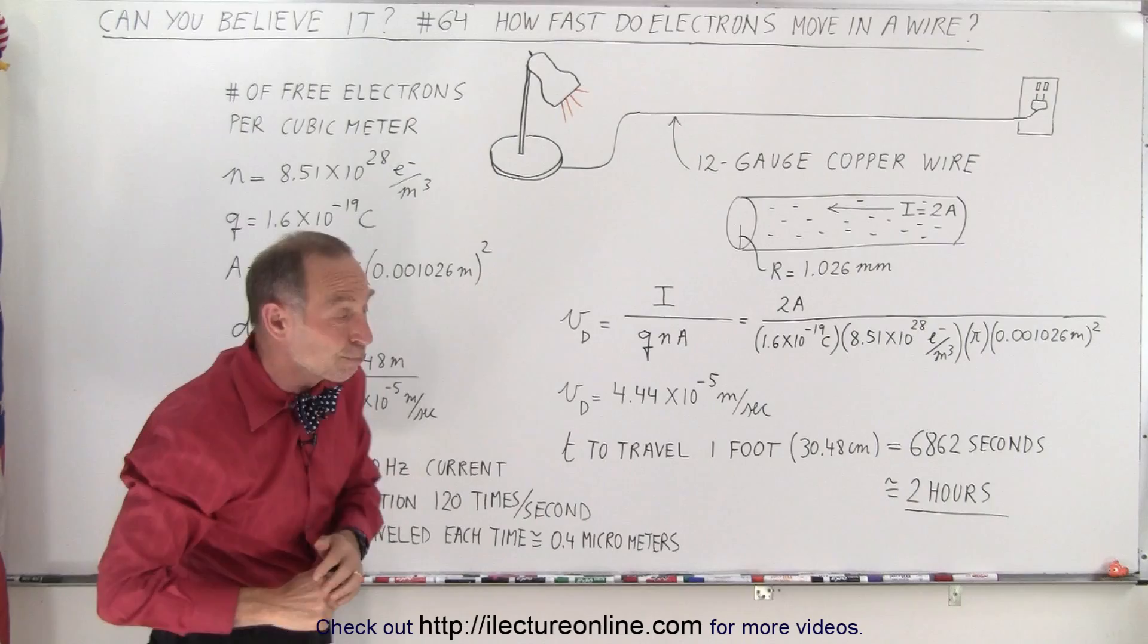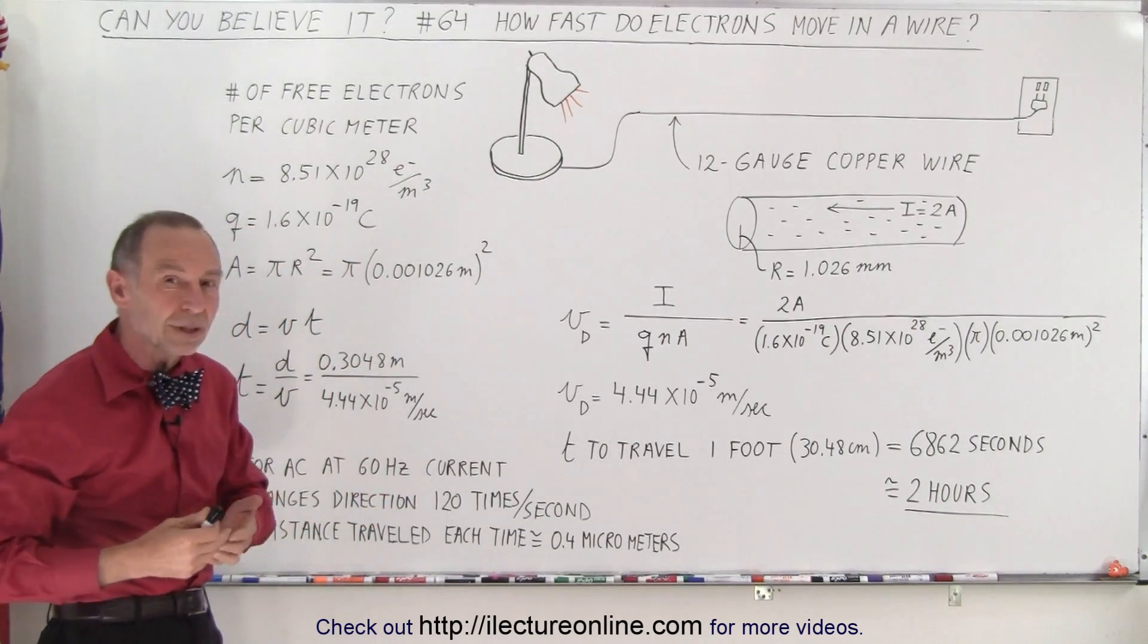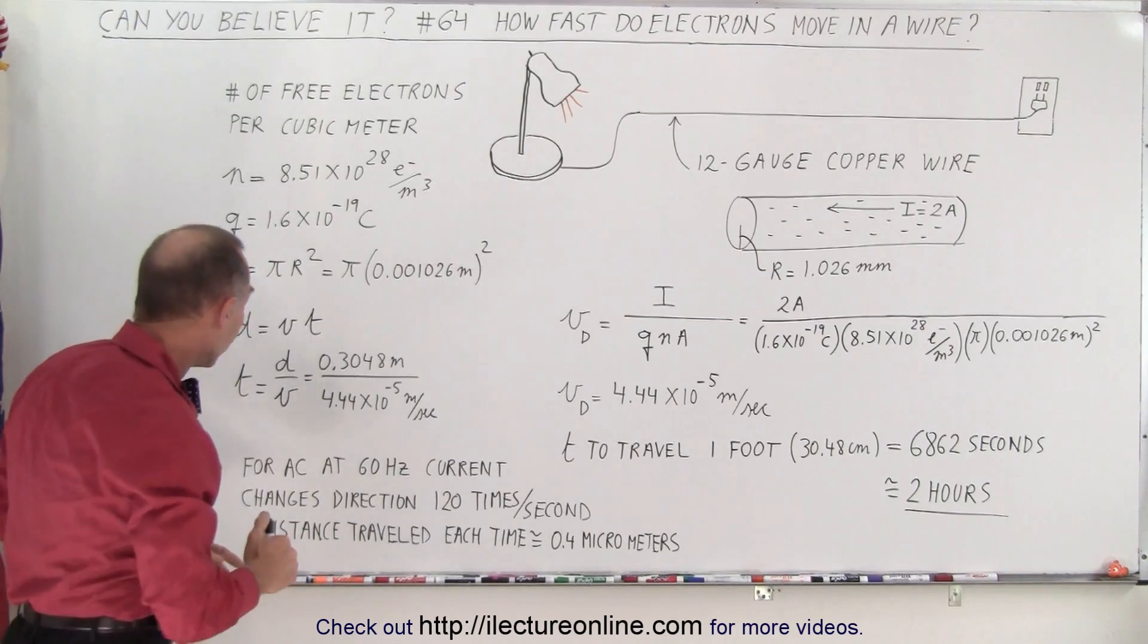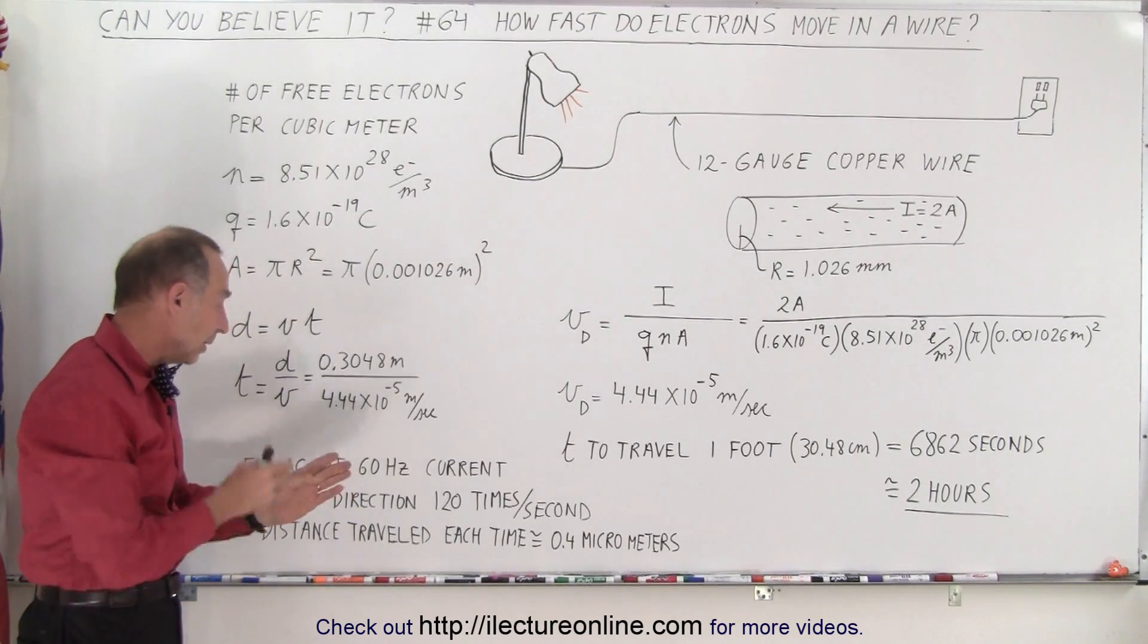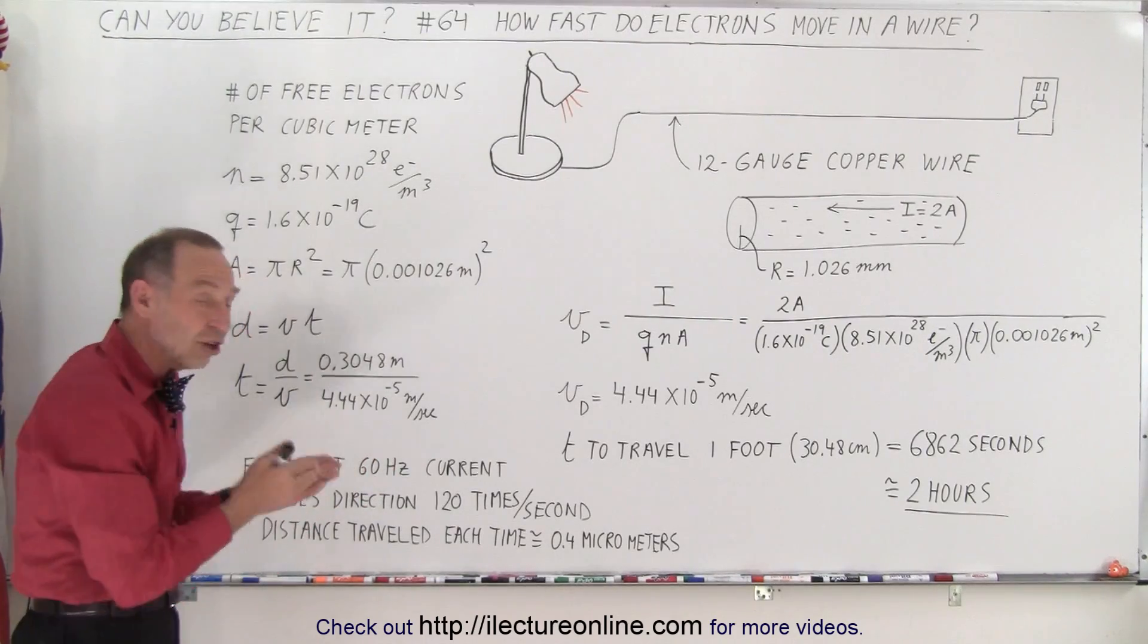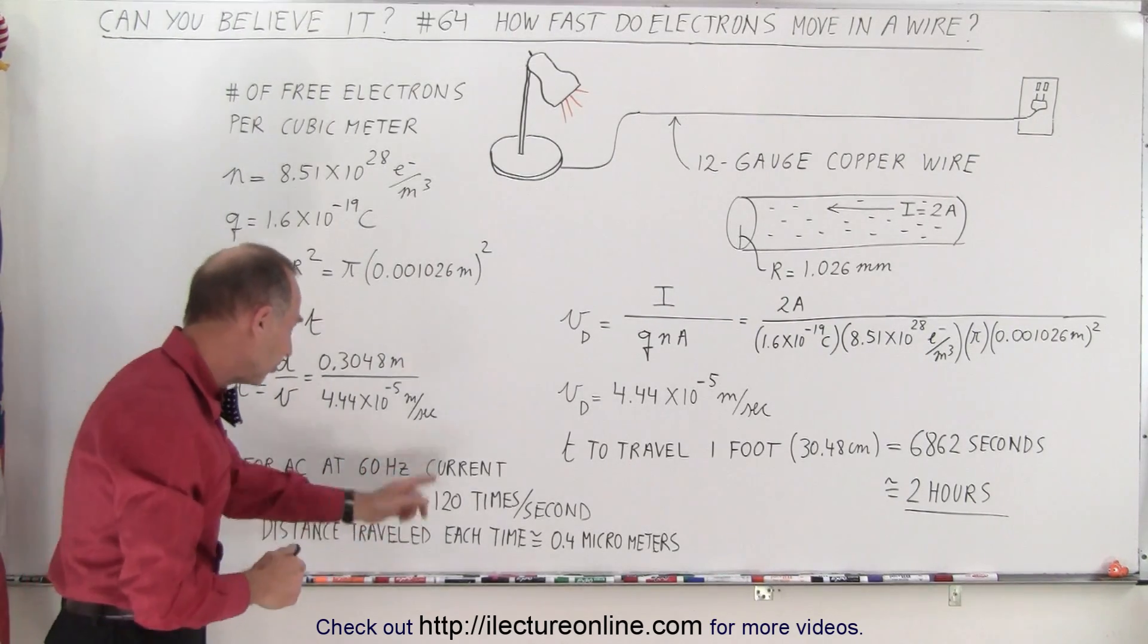It's very, very slow. Now in most cases we deal with AC current, alternating current that moves back and forth. With alternating current moving or vibrating at 60 Hertz per second, that means it goes back and forth, changes direction 120 times per second.